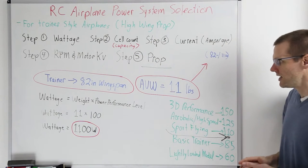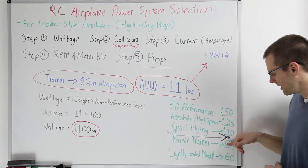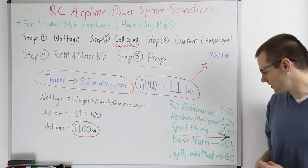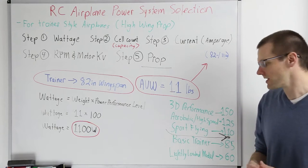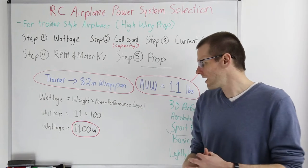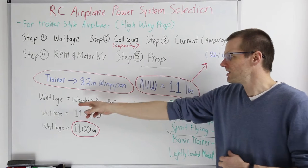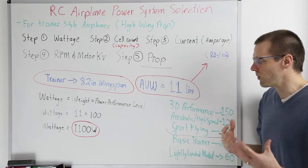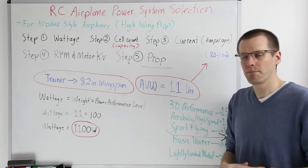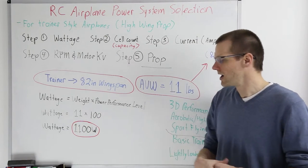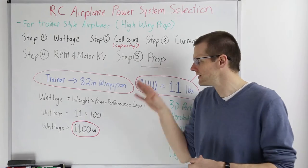We're going to select about 100 watts per pound for our trainer — only about 15 watts per pound more than the basic trainer. We want a little more pep but don't need sport or aerobatic performance. So 100 watts per pound works well. Our formula is: wattage = weight × power performance level. We take 11 pounds multiplied by 100 watts per pound, and we get a total wattage of 1,100 watts. That completes step one.